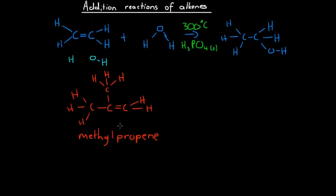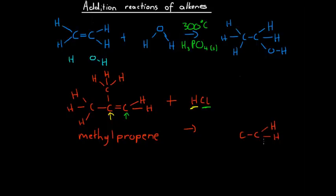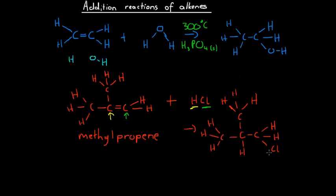Methylpropene is our molecule and we're reacting it with a molecule of hydrochloric acid. We're going to look at the two possible products. For the first possibility, the hydrogen goes onto the middle carbon and the chlorine atom goes onto the end carbon. The product we get would have an extra chlorine on the end and an extra hydrogen on the middle carbon, with everything else looking the same. The longest carbon chain is still three carbons with a methyl group in the middle, and the chlorine is on the end carbon — so this is 1-chloro-2-methylpropane.